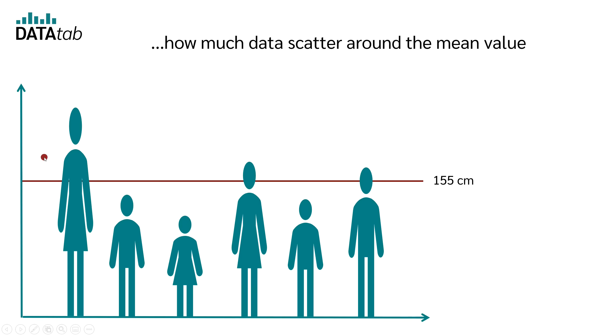Now we want to know how much the data scatters around the mean value. In order to figure this out, we look at the difference of each person to the mean value. So we look at the first person who deviates 18 cm from the mean. The second person deviates minus 8 cm from the mean.